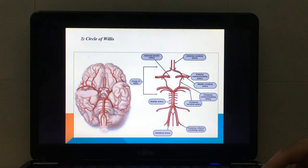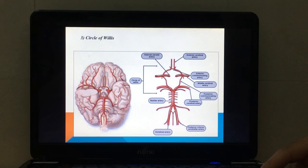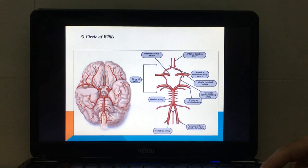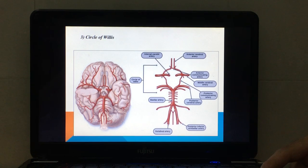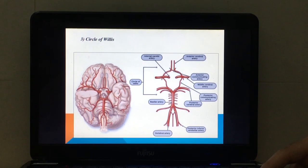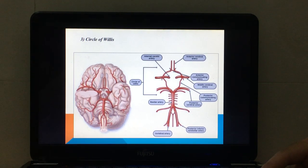Moving on to the Circle of Willis. The two anterior cerebral arteries are joined through the anterior communicating branch. The posterior communicating branch joins the middle cerebral with the posterior cerebral artery.